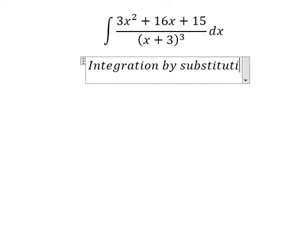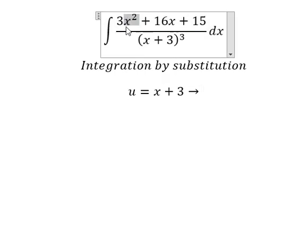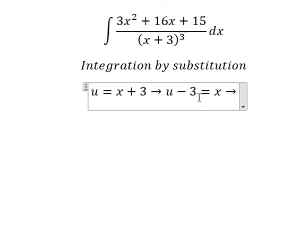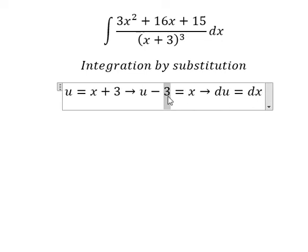By substitution, I will put u equals to x plus three because we have x plus three. So I will put number three, move it to the left. Later we do, first we differentiate both sides. This one we have number one, so we have du. This one we have number one, we have dx. This one, that is a constant.